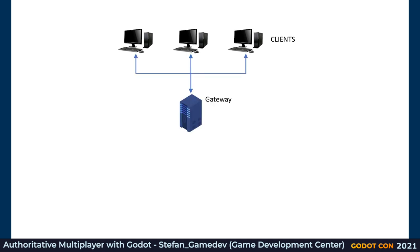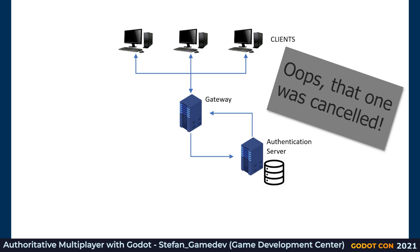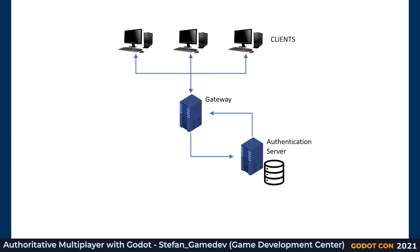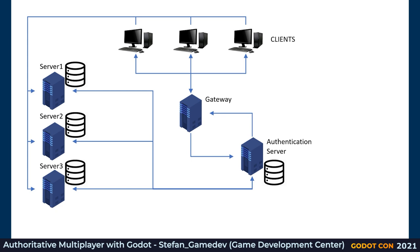Clients are going to be connecting to our gateway. The gateway functions as an access point to our authentication server. We do not want a direct connection between client and authentication server for security reasons. Once the player has been successfully authenticated, that signal comes back to the client and then the client can connect straight to the game server. We want that connection between client and game server to be direct so that latency is as low as possible.